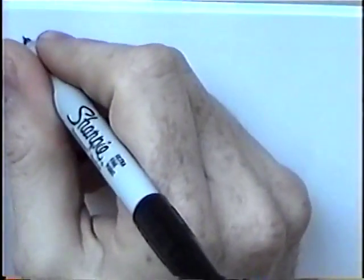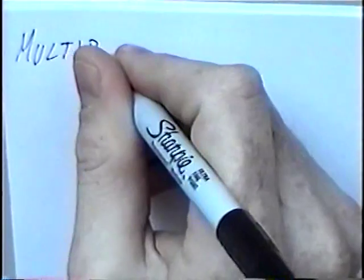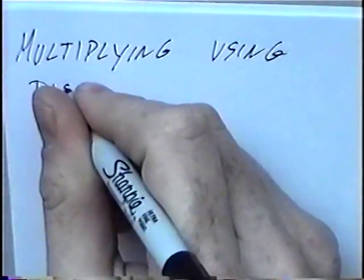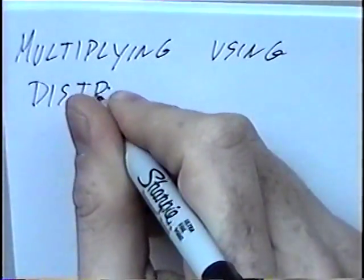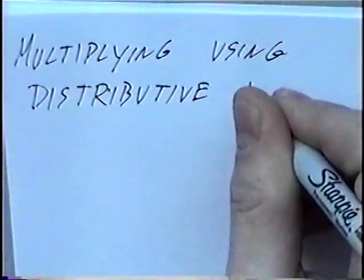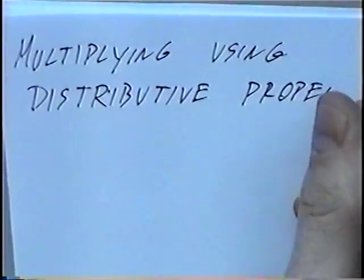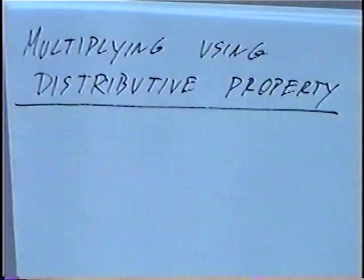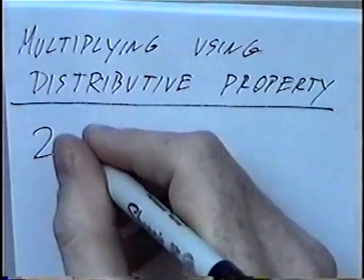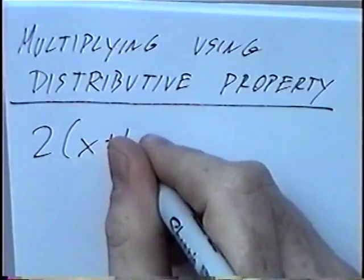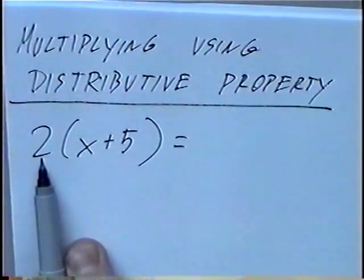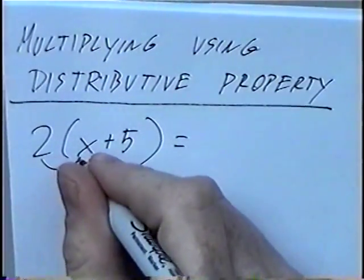The title of the first section is Multiplying Using Distributive Property. In this section we'll simplify by multiplying using Distributive Property. First question: use 2 and inside parenthesis x plus 5. With Distributive Property, we can take the number outside the parenthesis and multiply it by each number and each term inside the parenthesis.